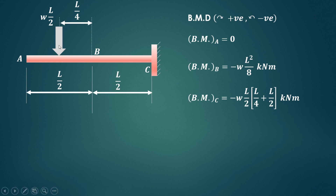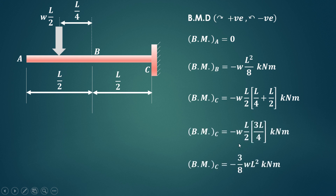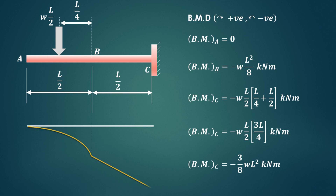Bending moment at C: on the left-hand side of C there is only the point load WL by 2, but the distance from that load to point C is L by 4 plus L by 2, which equals 3L by 4. Therefore, the bending moment at C is minus WL by 2 into 3L by 4, giving minus 3WL squared by 8 kNm.